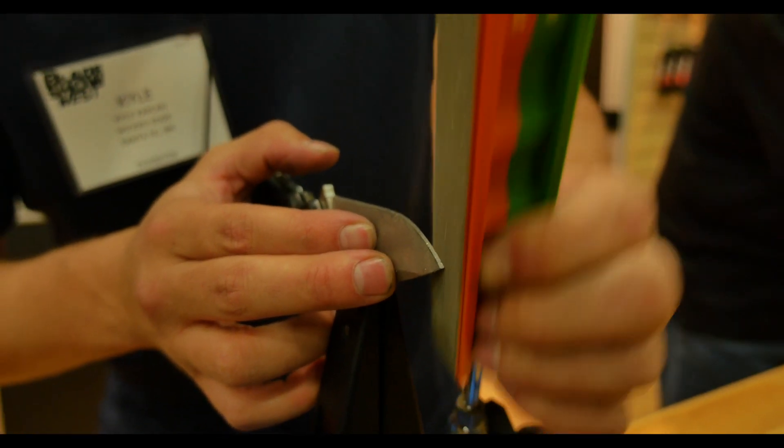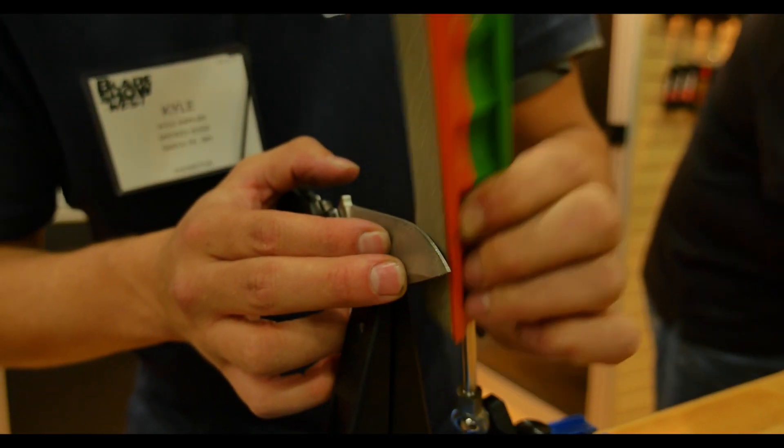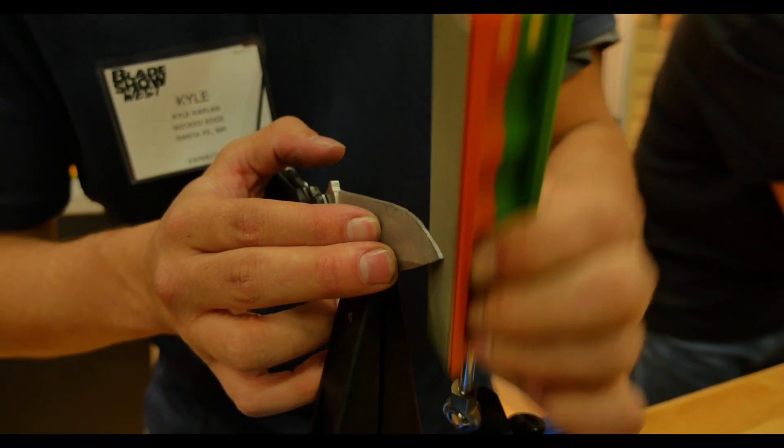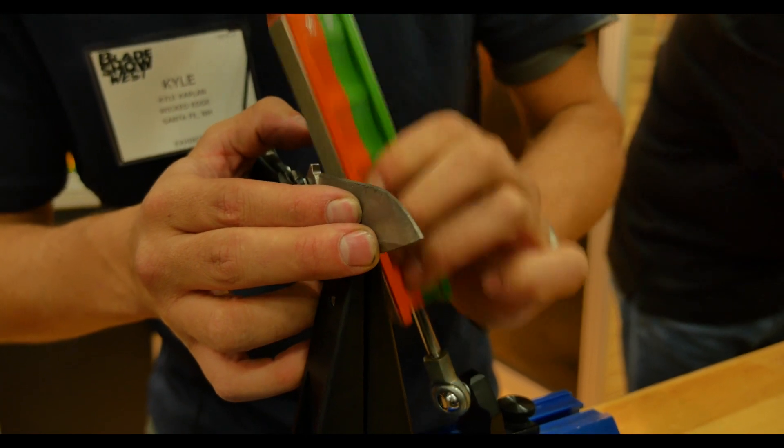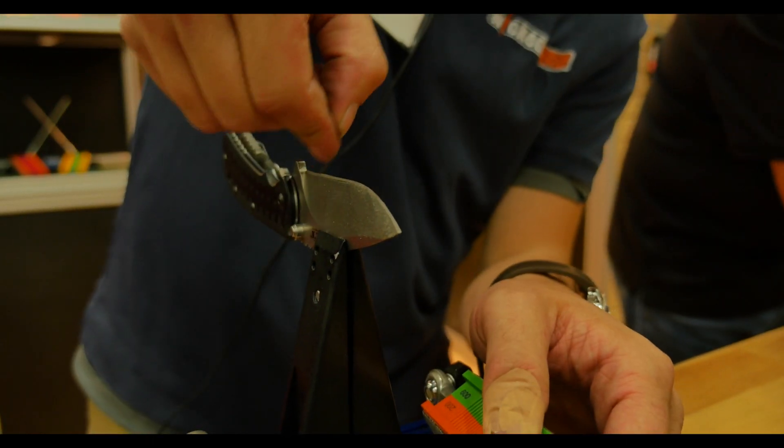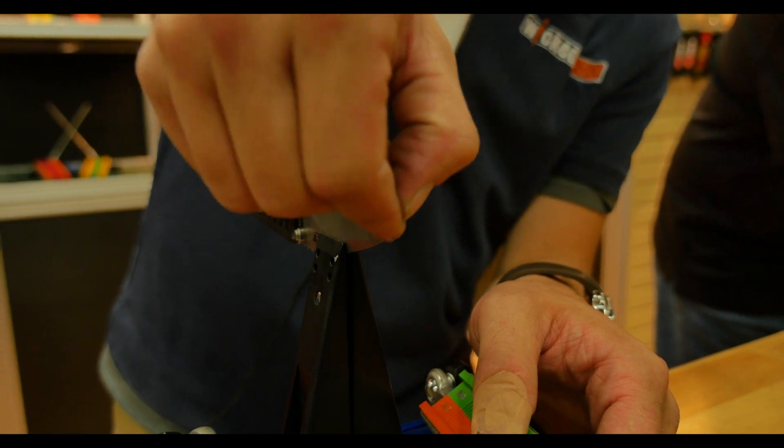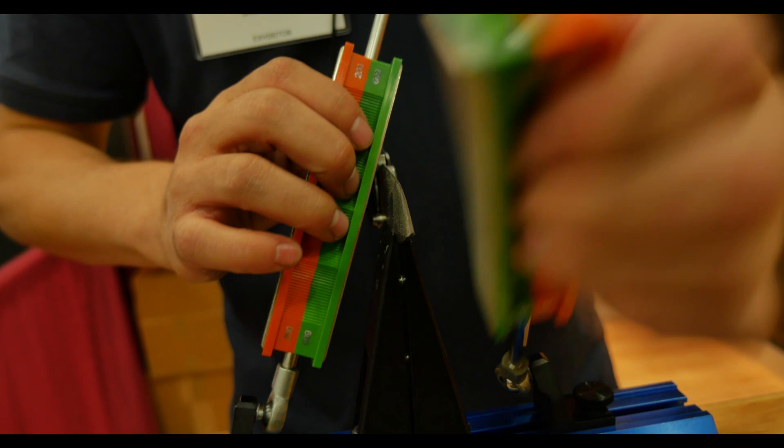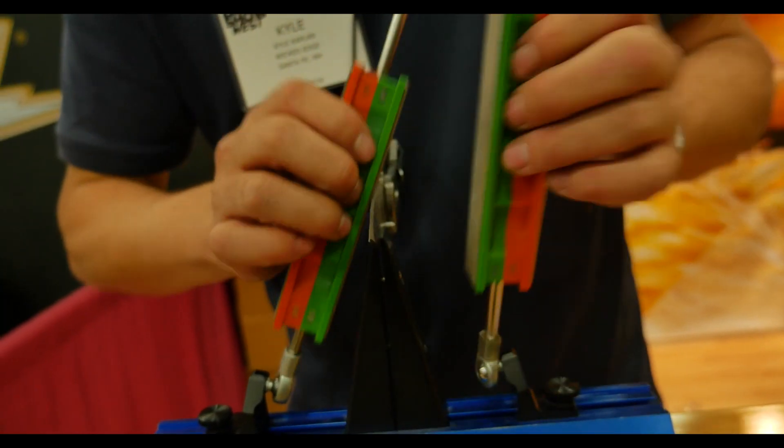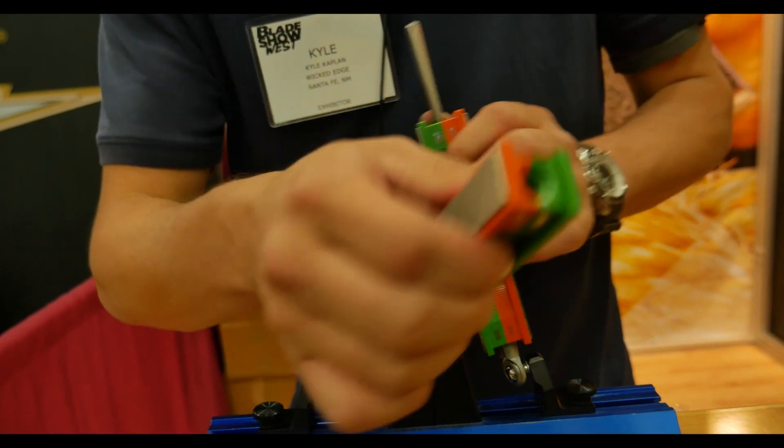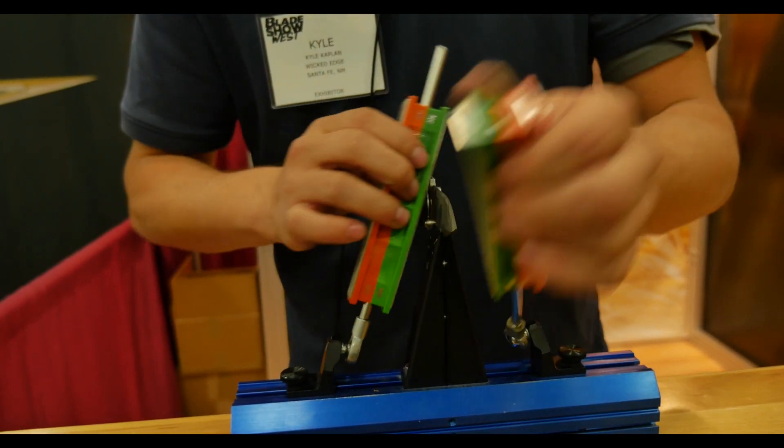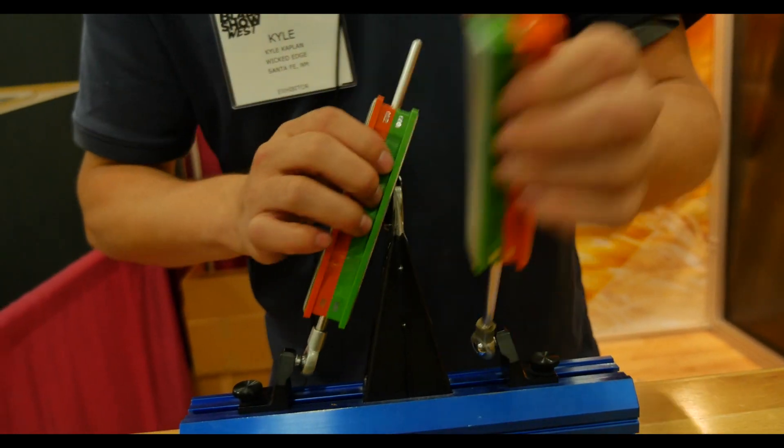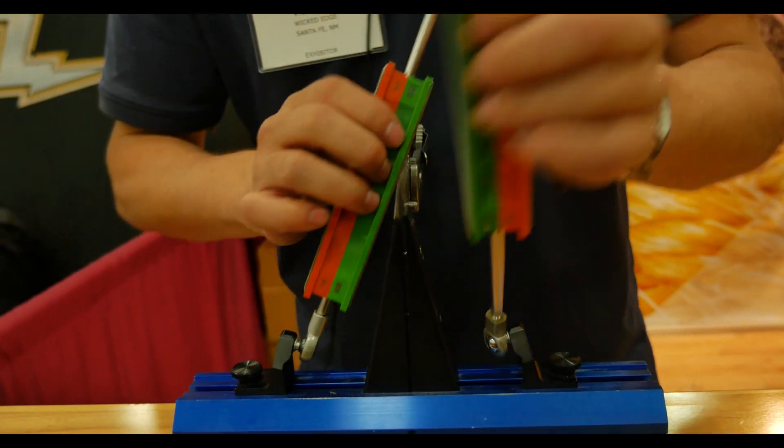Now I'm just going to kind of scrub on this. And then once I've drawn the burr on both sides I switch up to the 600 grit stone again. And I'm just going to sharpen both sides simultaneously. The number of strokes you do kind of depends on how refined you want the edge and the type of steel. Typically just for an EDC if you just want a good working edge it's about 20 strokes per stone per side.